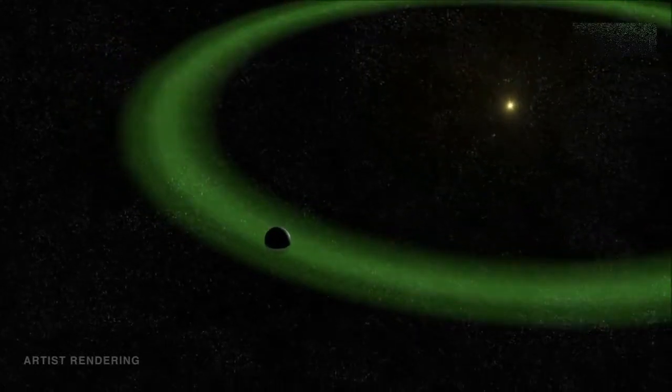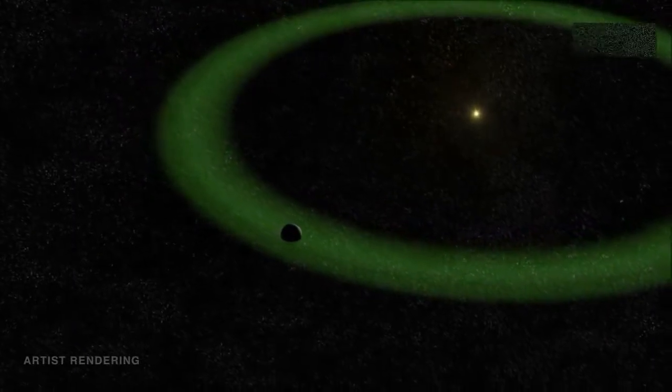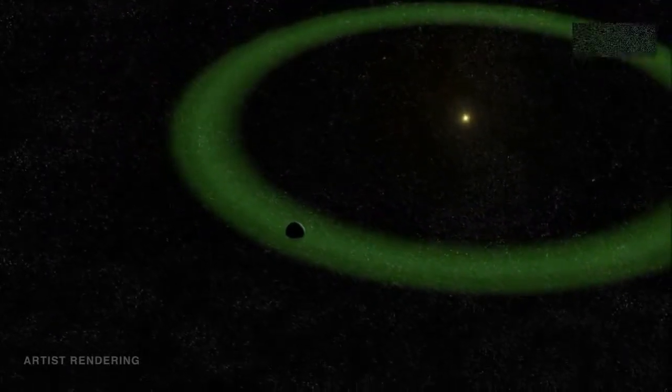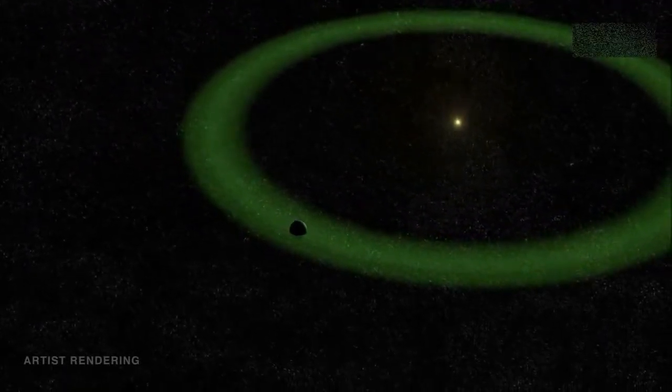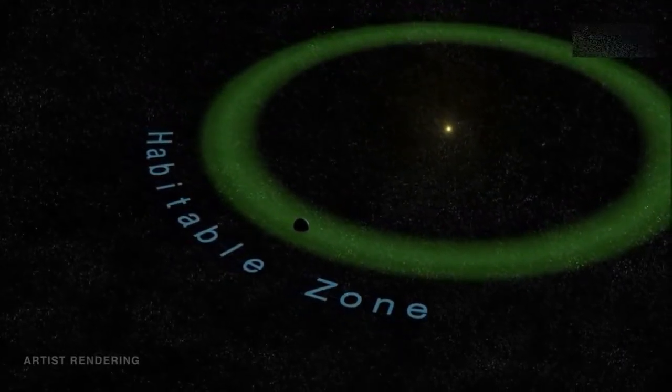Moreover, Kepler-452b's orbit is located in the Goldilocks zone of its star system, where the temperature is just right for liquid water to exist. This is also known as the habitable zone, because water is required for life as we know it.